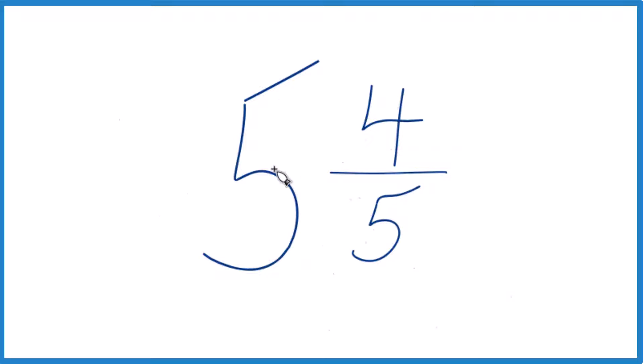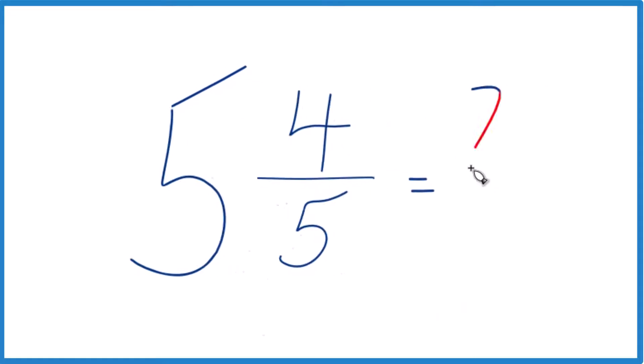Here's how you do it. You take the whole number 5. 5 times 5 is 25. Take that and add it to 4. So 25 plus 4, that is 29.